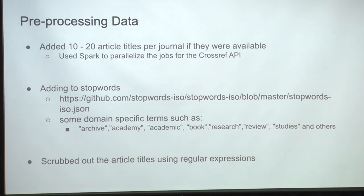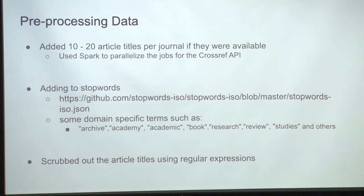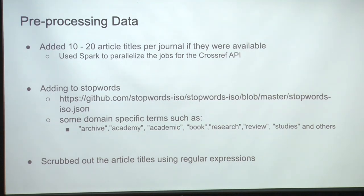I grabbed for the first round 10 to 20 article titles and used Spark to parallelize the jobs across the API — otherwise it would take forever. I also added some stop words; the ISO standard has a list of stop words from the languages that are part of the ISO standard. I used that as well as some domain-specific terms like journal, academic, and book. I also scrubbed out article titles because I noticed there were some HTML entities, XML, and some mathematical and chemical formulae — scrubbing everything out to create essentially a distilled, super pristine set of article titles.